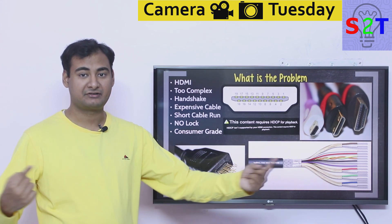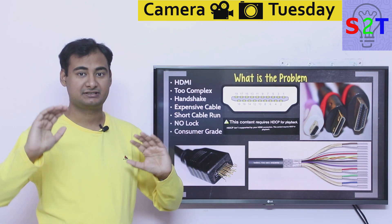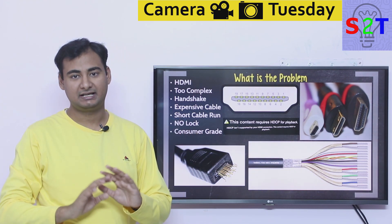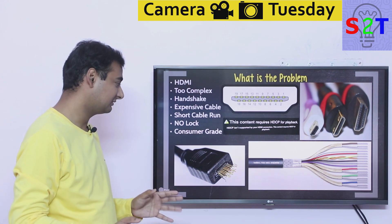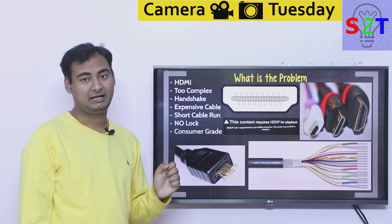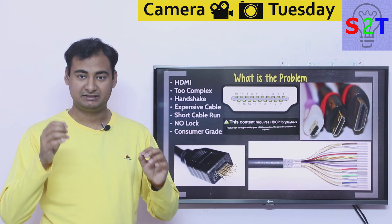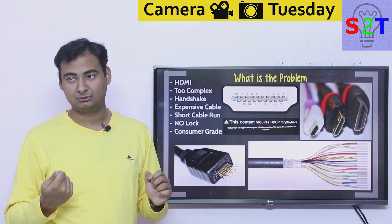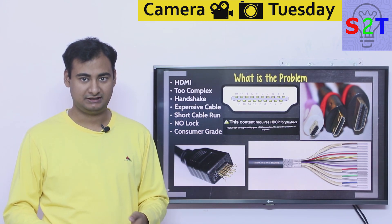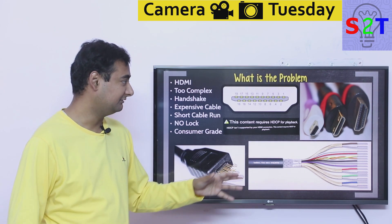On top of that, even though the cable is expensive, it cannot run for very long distances. You can't have a camera at one end of a stadium and record on the other end — that's not happening. And it does not have a locking mechanism, so a minor tug can pull it right out.